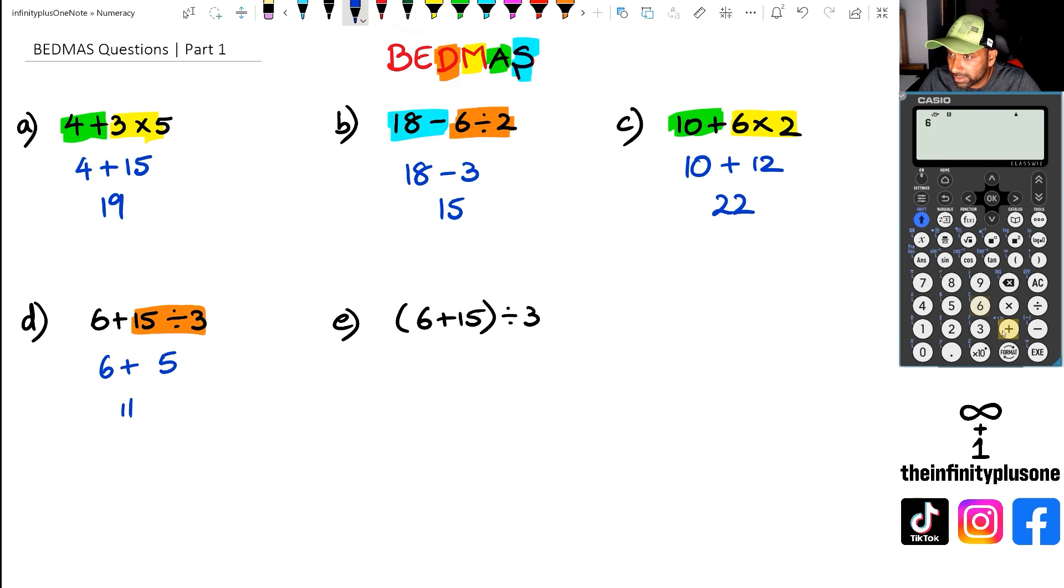I'm just going to put that through the calculator. So we got 6 plus 15 divided by 3, and that's going to be 11.